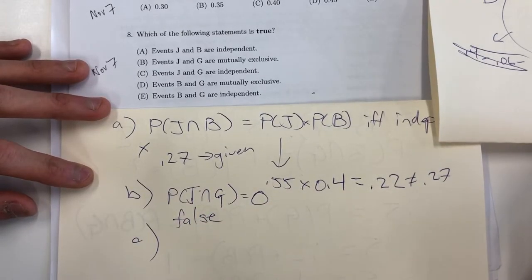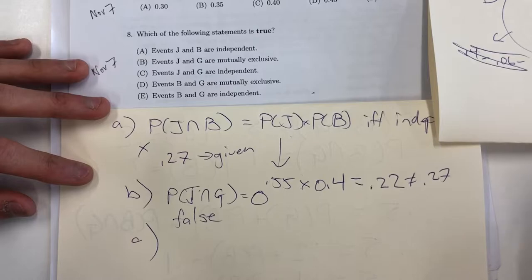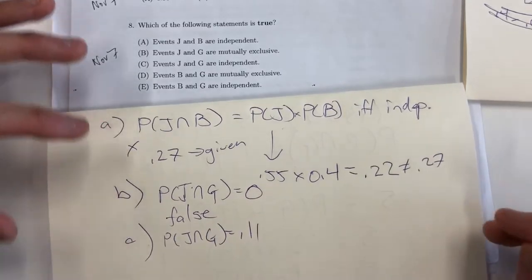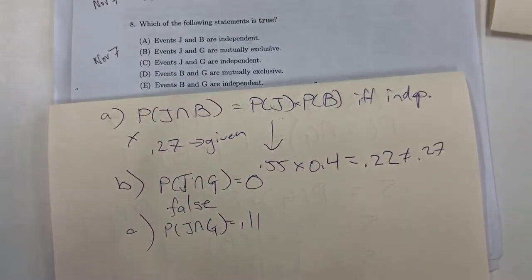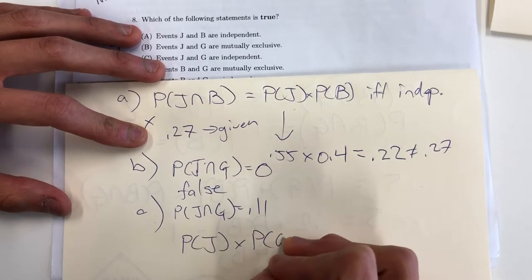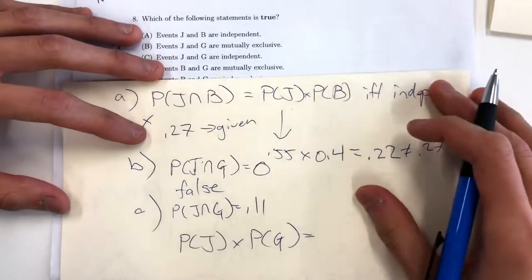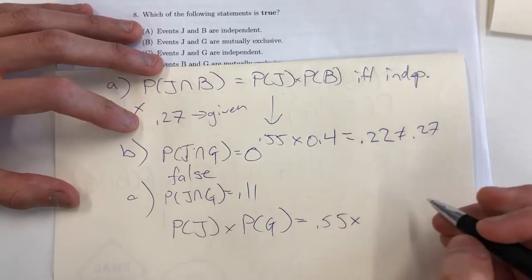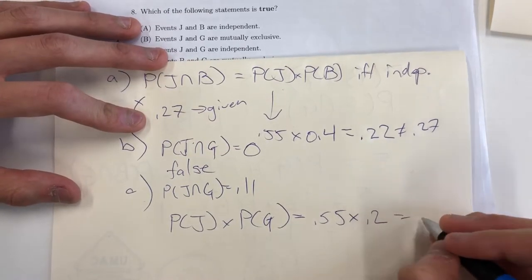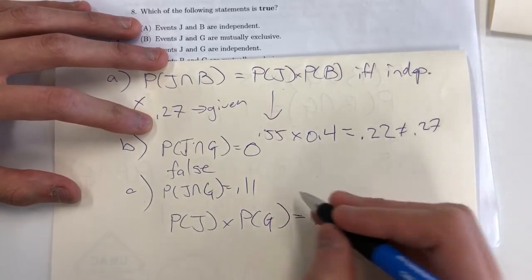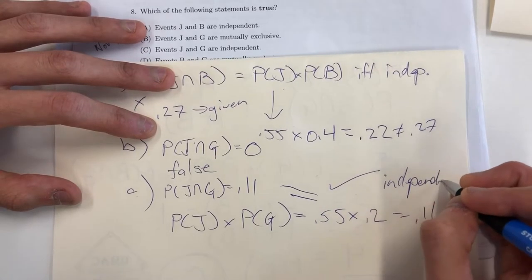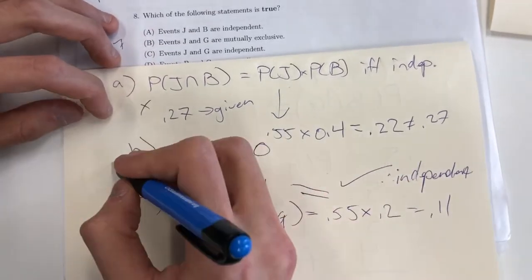Let's look at letter C. Events J and G are independent. Let's verify this. We are given that J and G equals 11%. Let's find the product of the two events and see if it equals 11% or not. P(J) times P(G) equals 55% multiplied by 20%, which does equal 11%. So since those two are equal, they are independent. The letter choice here is C.